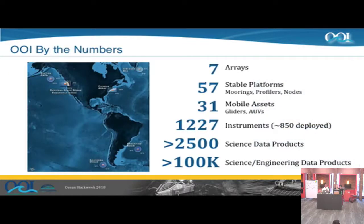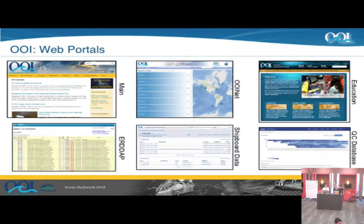OI, as you heard yesterday, is the Eastern Observatories Initiative, NSF-funded. There are seven different arrays, two of which are suspended or at least in a partial suspension state. There are 57 different platforms, 31 mobile assets like gliders and AUVs, over 1,200 instruments, and we've got four data evaluators to look at 2,500 data products. So there had to be some procedures put in place in order to review that amount of data and make sure it's getting through the system.